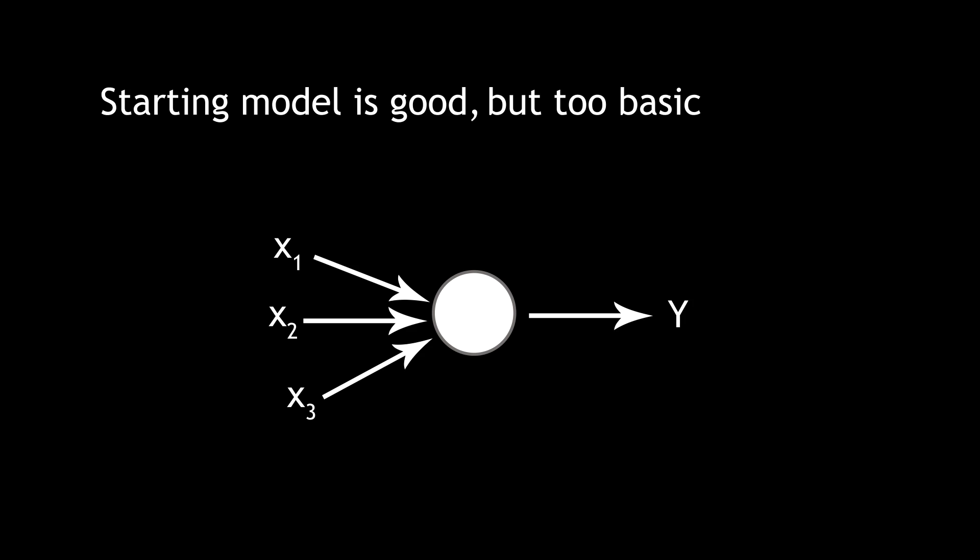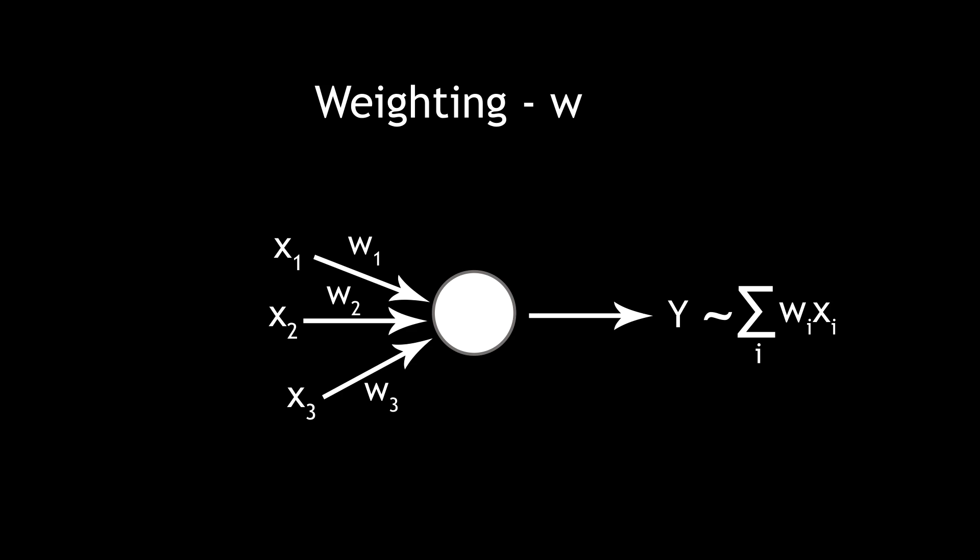This is a good start, but it's quite a basic model and doesn't allow for much complexity in terms of making different decisions. The problem is that each input, xi, has the same weighting. We can build up a better system if we assign a unique weighting w to each input. We can then multiply each input by its weighting when we take their sum. This allows for different inputs to contribute different amounts and gives the perceptron a sense of importance for each input.